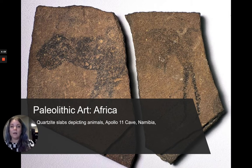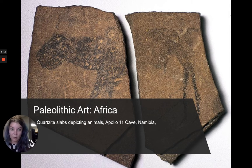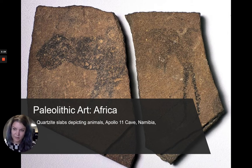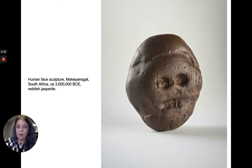Here is an example of work from Africa that still exists and is very, very old. This is a slab found in the Apollo 11 cave — a cave in Namibia in Africa. These are slabs that have been broken, with very early drawings of animals on them. This is around 35,000 years old.